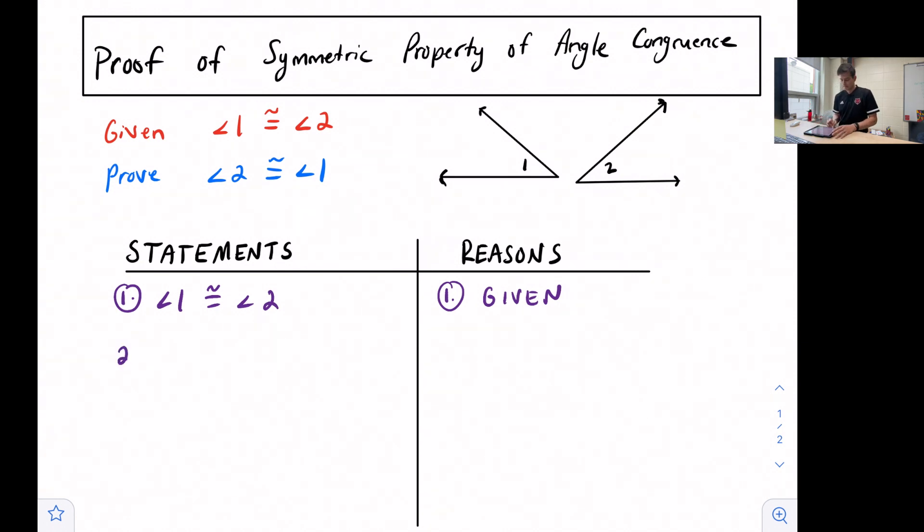Now we want to make a second statement and see what do we know about this congruence. Well, if two angles are congruent, that tells us that their measures are equal. So we could say the measure of angle one equals the measure of angle two. And what allows us to say that is just the definition of congruent angles.